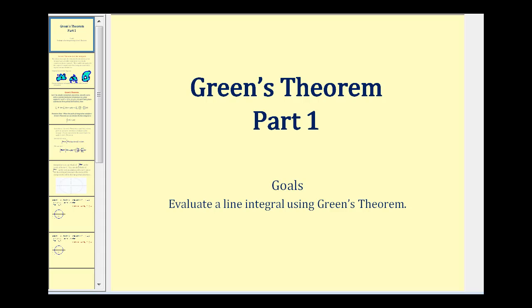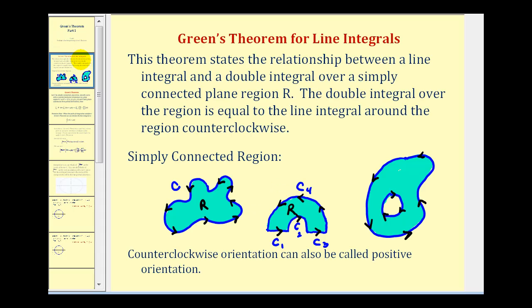Welcome to part one of Green's Theorem. Green's Theorem states the relationship between a line integral and a double integral over a simply connected plane region R. The double integral over the region is equal to the line integral around the region counterclockwise. The region needs to be simply connected and piecewise smooth, and the orientation must be counterclockwise.